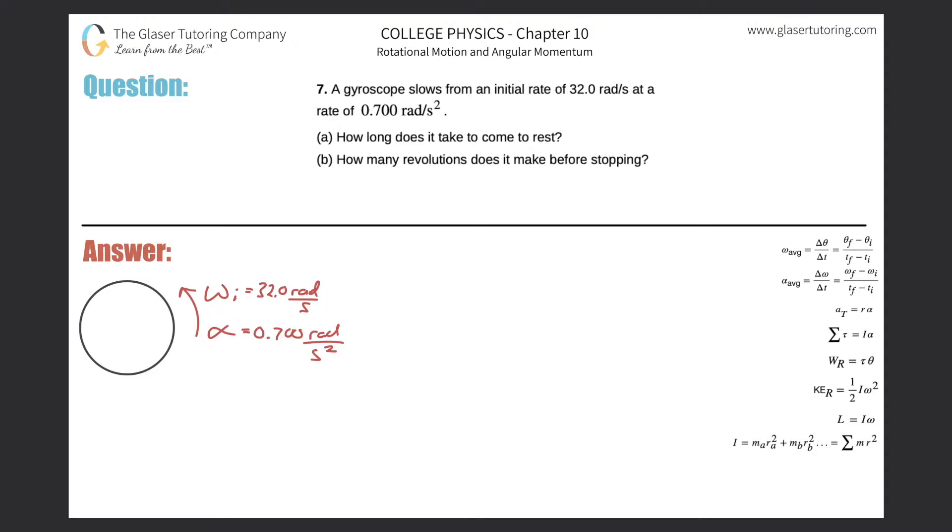Number seven: a gyroscope slows from an initial rate of 32 radians per second at a rate of 0.7 radians per second squared. How long does it take to come to rest? All right, so I wrote down what we know over here. They're also telling us or asking us how long, so we have to find the time.